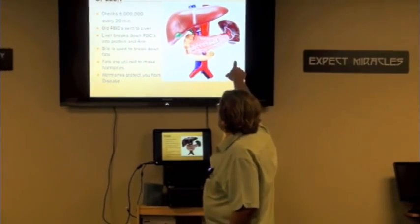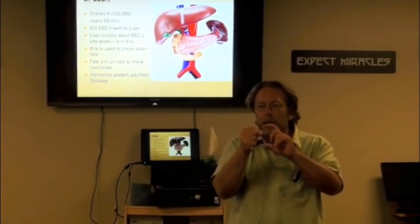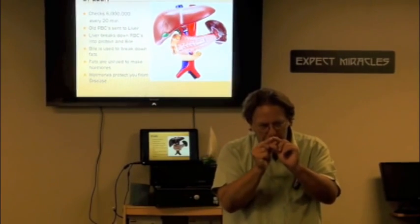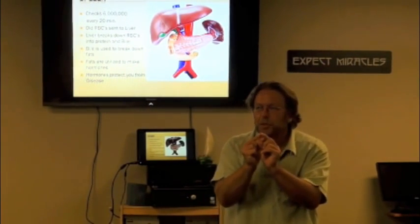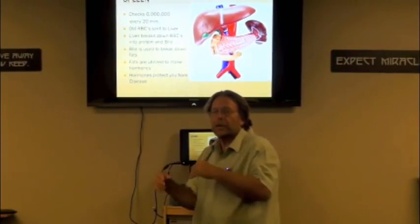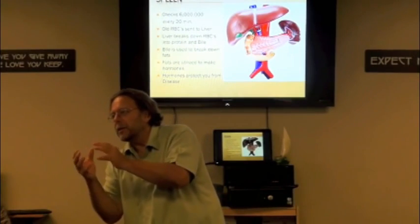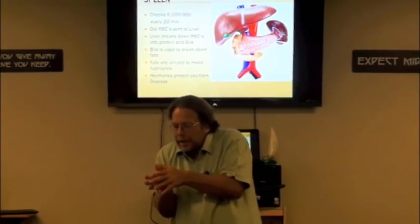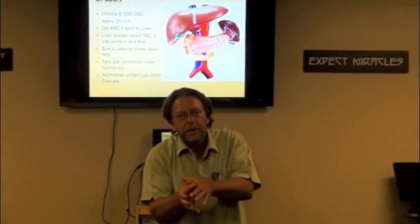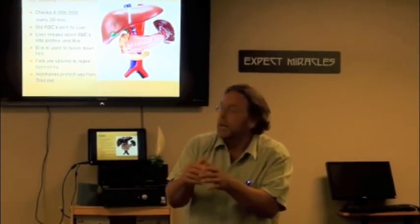See, this spleen here, that little tiny, beautiful organ, it checks every red blood cell you got every 20 minutes. And the ones that aren't exactly perfect, because red blood cells only last about 120 days, it passes them over to the liver. Now the liver takes these red blood cells, breaks them down into bile and different protein constituents so your body can break down fats. Without fats, your brain doesn't work, your immune system is screwed. Nothing works.